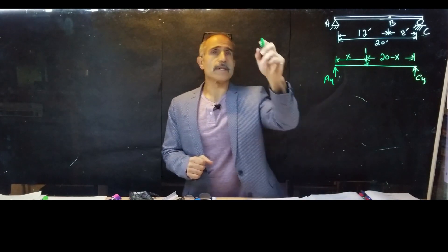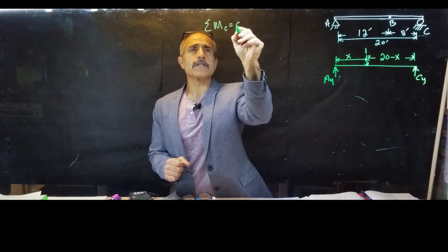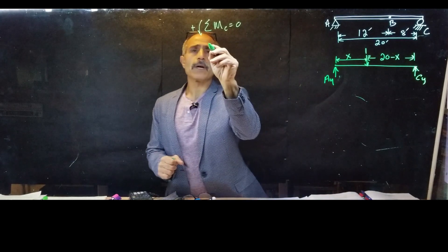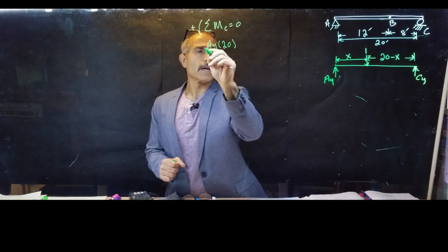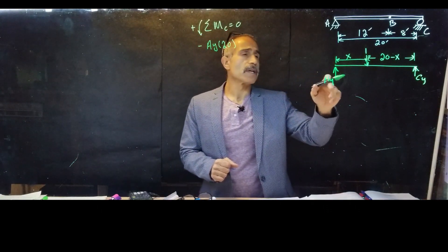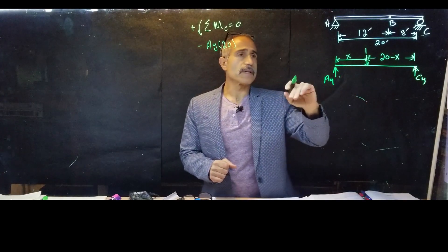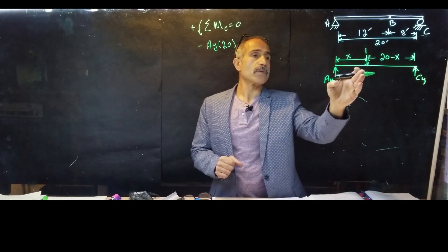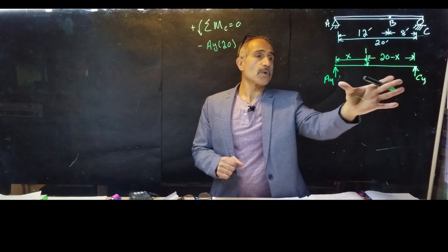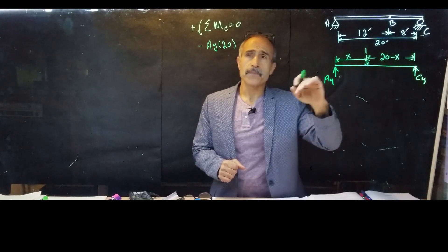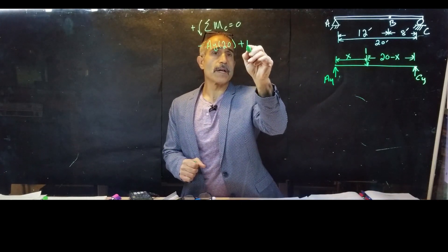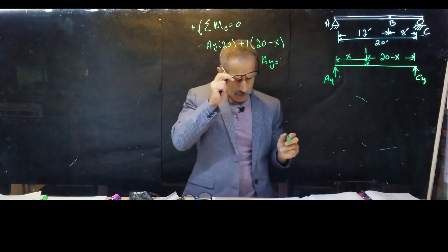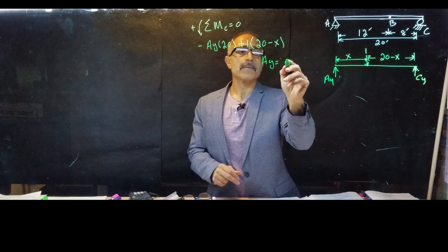Let's take a moment about C. Summation of moments about point C is equal to zero; counterclockwise is positive. I have A_Y multiplied by 20 — that's negative because it's going clockwise — and then 1 multiplied by (20 minus X). This unit load is at a distance X from end A, so from C back that distance is 20 minus X. Therefore A_Y equals 1 minus (1/20)X.